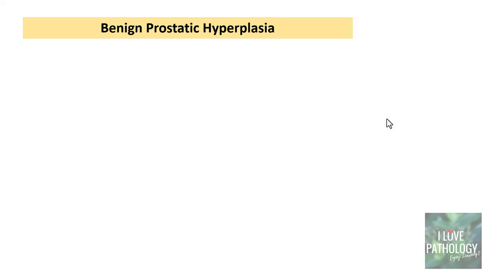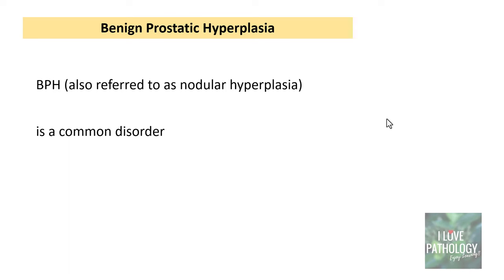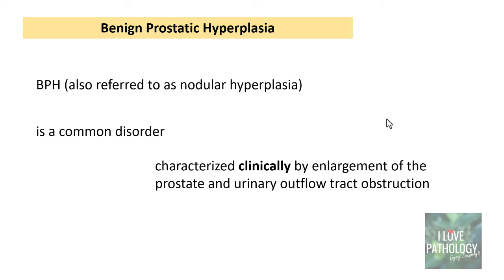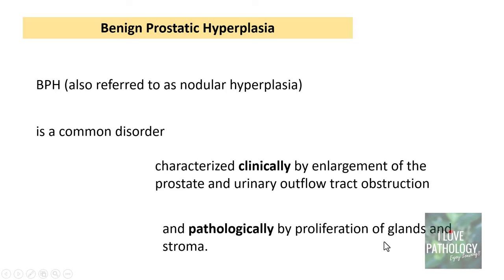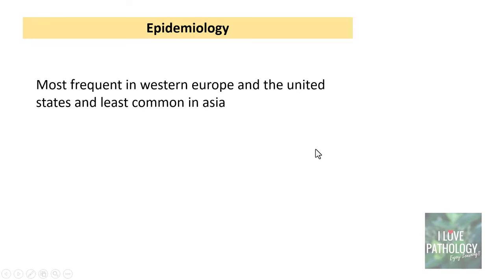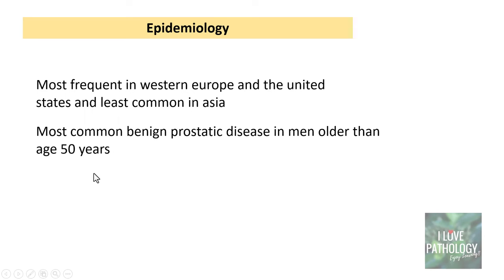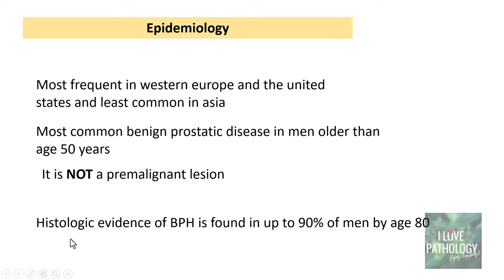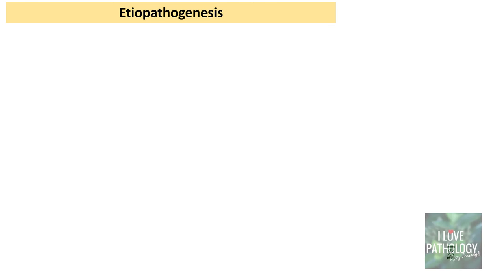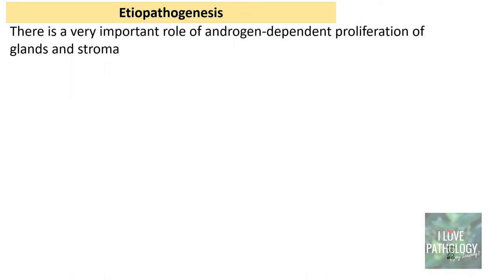Benign prostatic hyperplasia, also referred to as nodular hyperplasia, is a very common disorder characterized clinically by enlargement of the prostate and urinary outflow tract obstruction, and pathologically by proliferation of glands and stroma. Epidemiologically, it is most frequent in Western Europe and the United States and least common in Asian populations. It is the most common benign prostatic disease in men older than 50 years. Note that it is not a premalignant lesion, and histologic evidence of BPH is found in up to 90% of men by age 80.